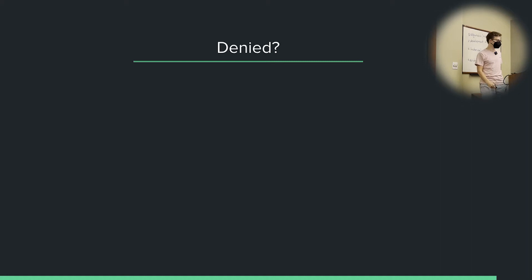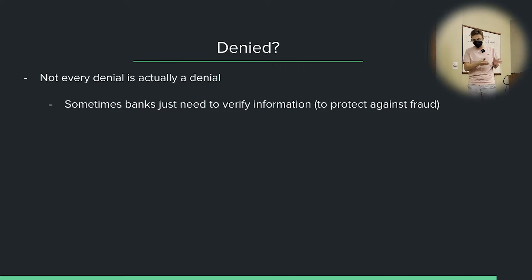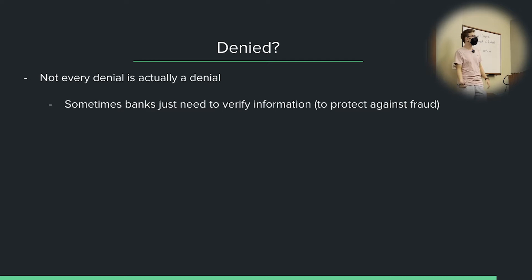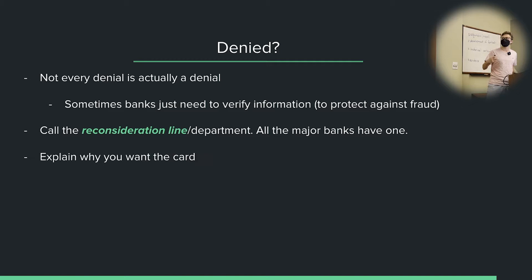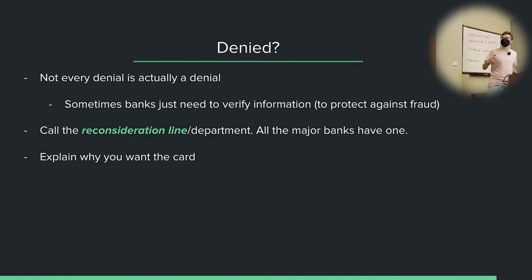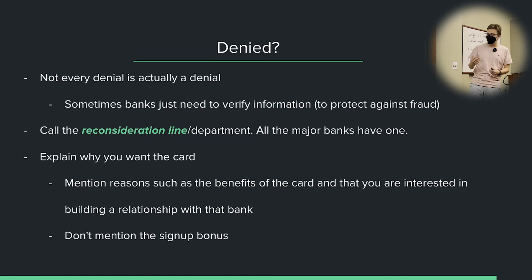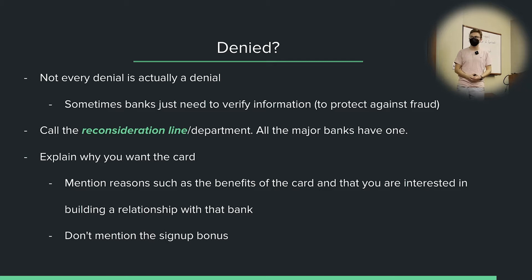So what if you get denied? The important thing to remember is that not every denial is actually a real denial. Sometimes banks need to verify your information to protect themselves against fraud. You might have been initially denied, but you can call them up, verify some information — such as proof of address, maybe faxing in a social security card copy — and they can actually approve you. If you're actually denied, you can call the reconsideration line or department. Pretty much every major bank has one of these. You call them up and say you'd like to get this card, you're a responsible credit user and a good customer.